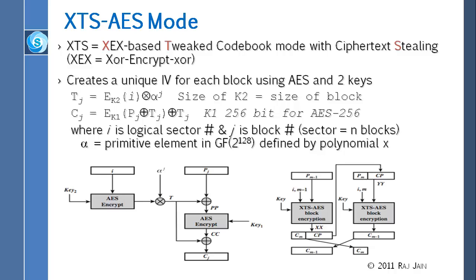The only thing left is cipher text stealing. If the last block is not full, you have the choice of either doing padding or doing cipher text stealing. Cipher text stealing means you take the last full block and the last incomplete block and do some text shifting. This is PM minus 1 and PM, where M is the number of blocks. You take PM minus 1, do all the operations, and don't send all of it right away.